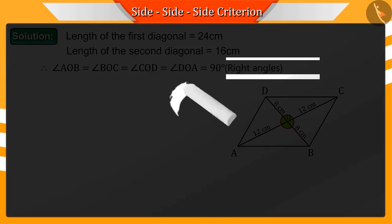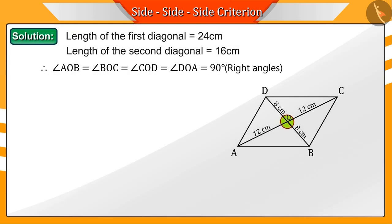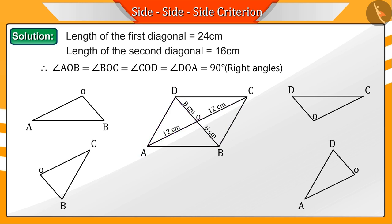In this rhombus, which triangles can you see? Correct! Here we can see four triangles: triangle AOB, triangle BOC, triangle COD, and triangle DOA.